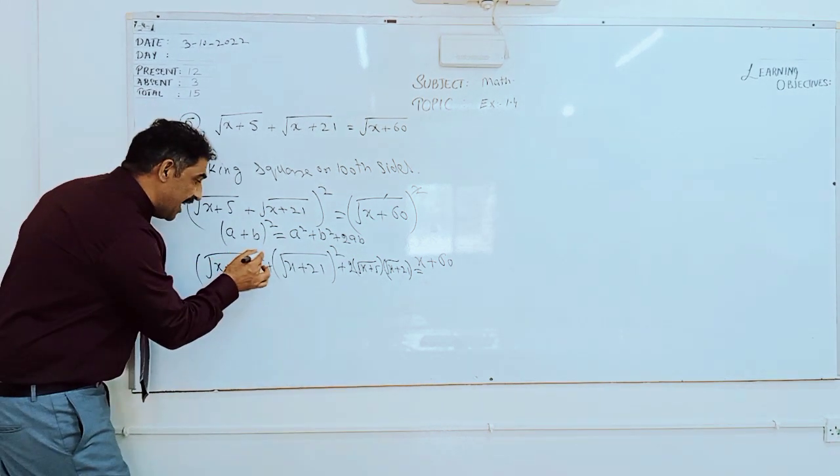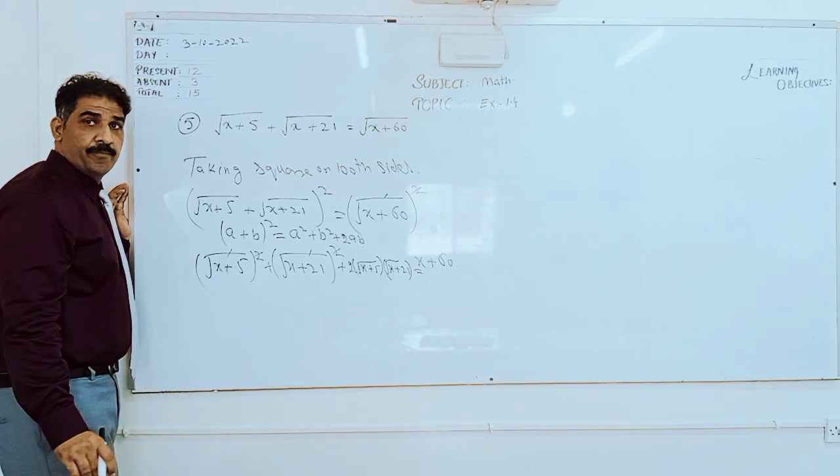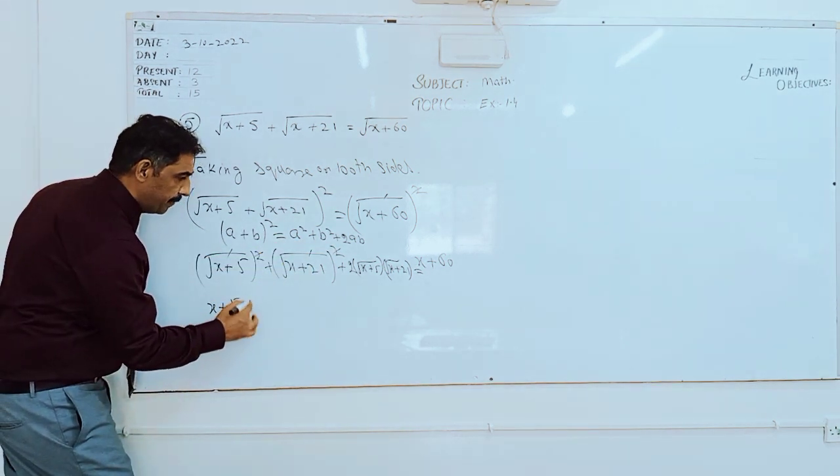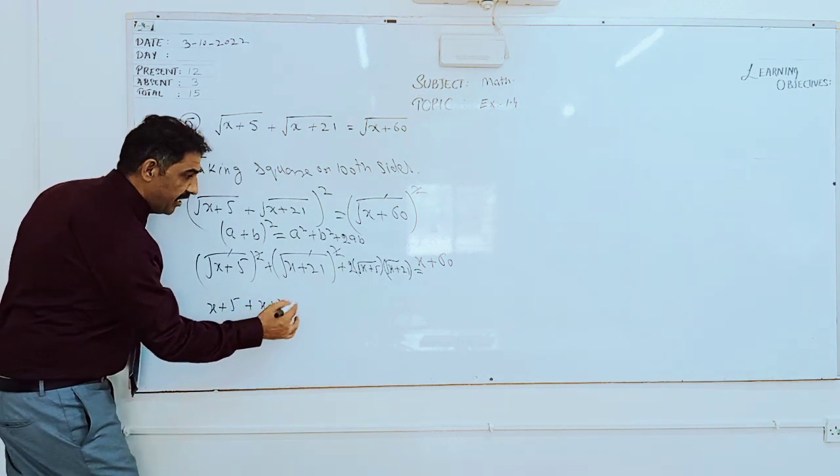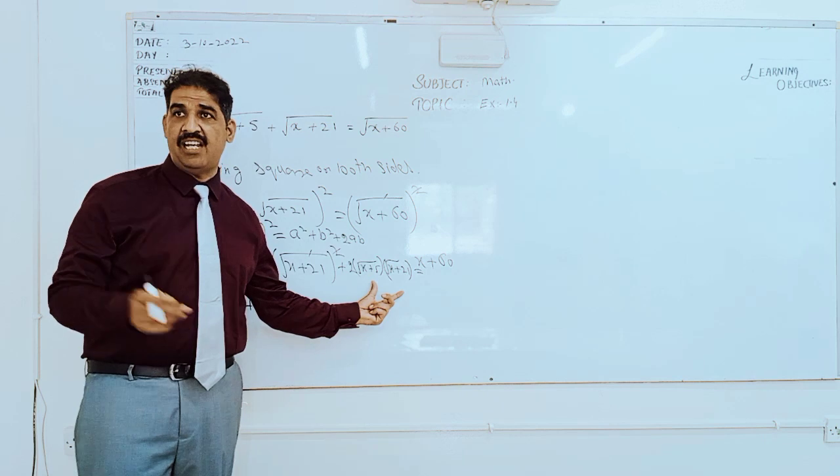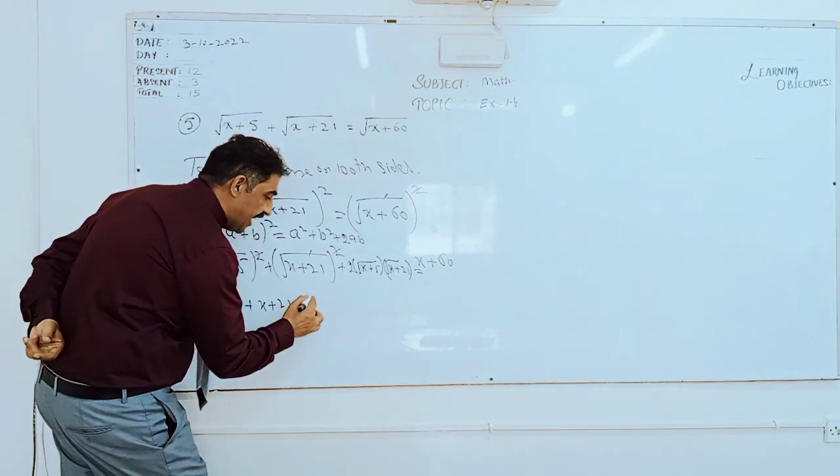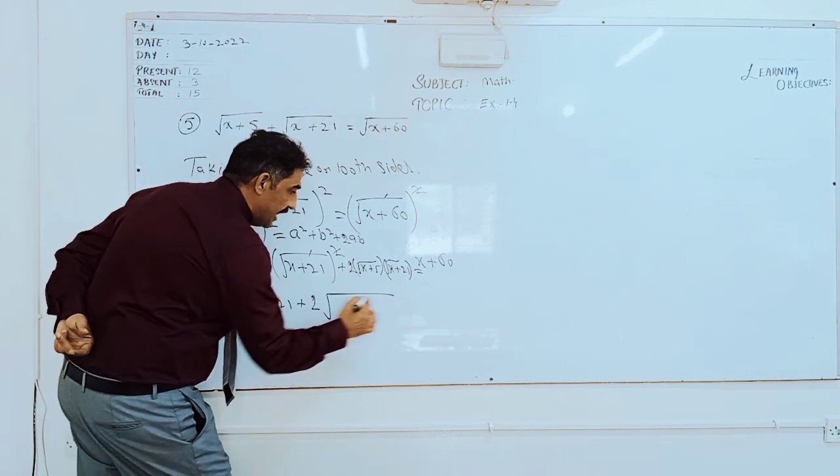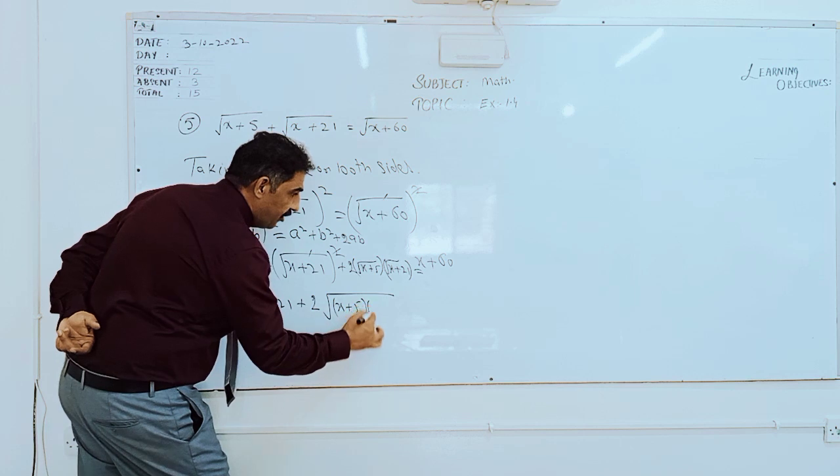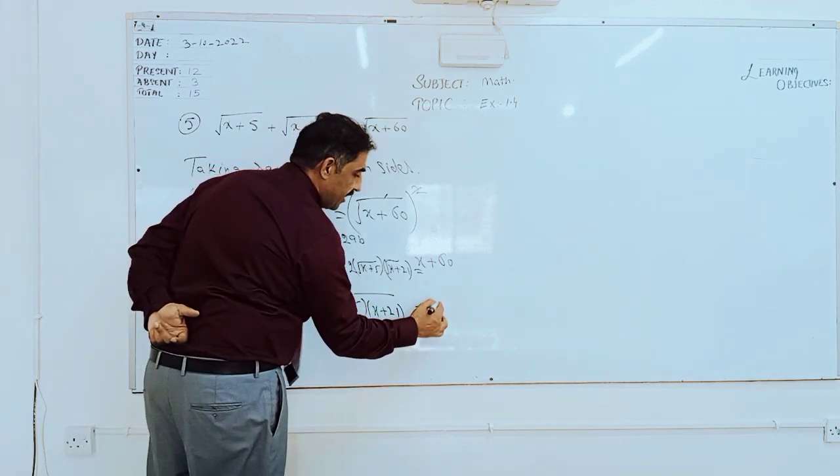Now you can cancel like this. What about that? Simply like x+5 plus x+21. If both numbers are having multiplication sign or division sign, then you can write single. So we can write like this: 2√[(x+5)(x+21)] = x+60.